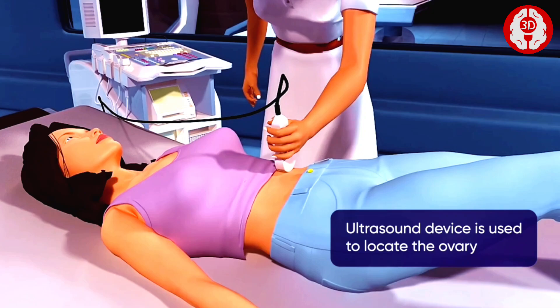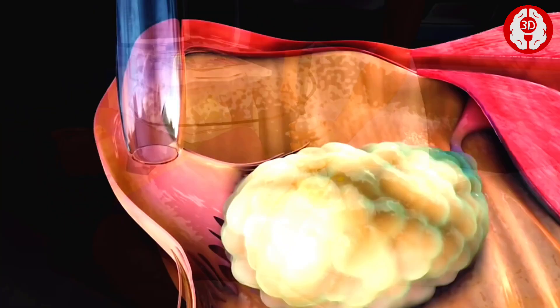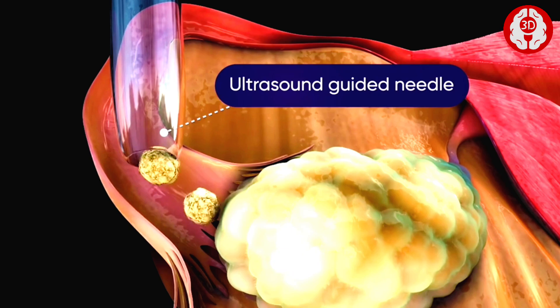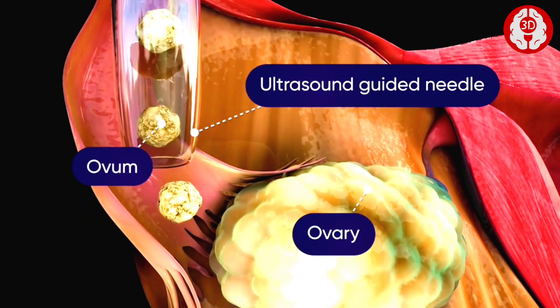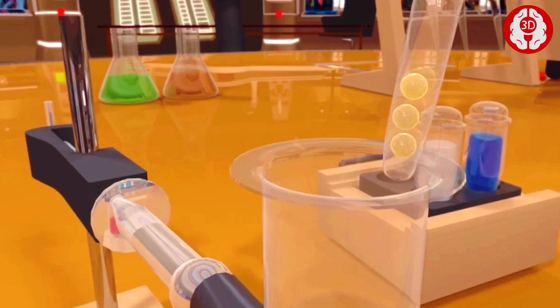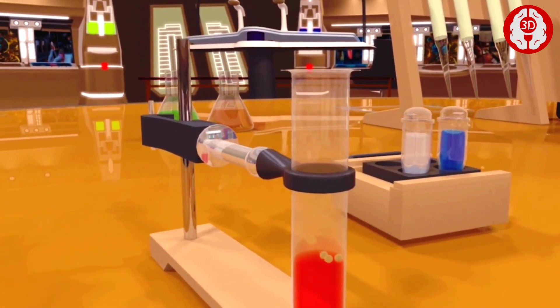Now, an ultrasound device is used to locate the ovary. Through an ultrasound-guided needle, the ova are aspirated from the ovary. The subsequent steps are performed in a completely sterile environment.